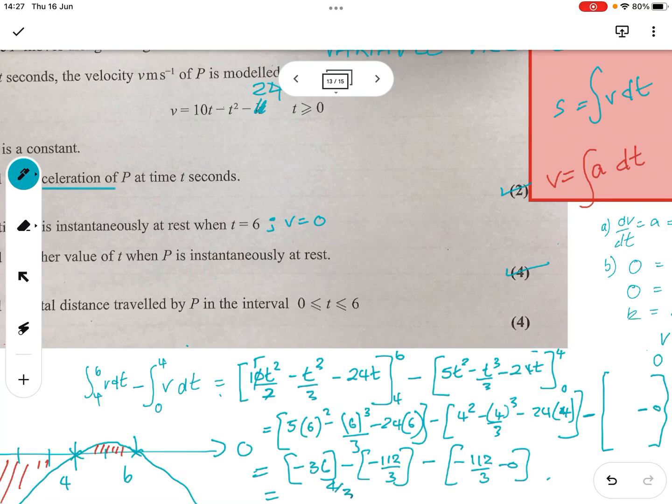Okay. So, the first part ends up with minus 36 minus minus 112 over 3. Just for interest, if you were doing it separately. So, that's 4 over 3 minus minus 112 over 3 is the second answer. So, I've got that minus minus minus 112 over 3 gives me 116 over 3. Brilliant. And that is the answer.